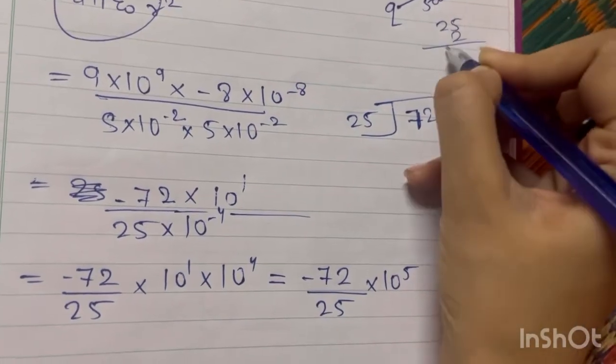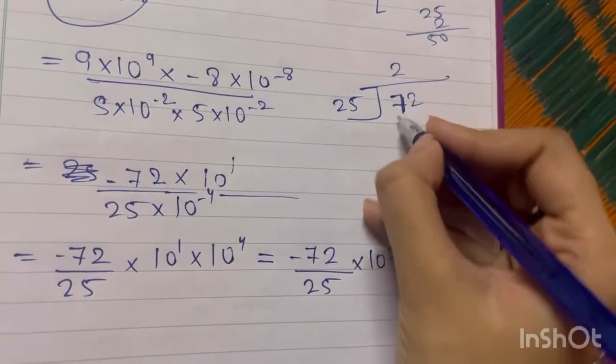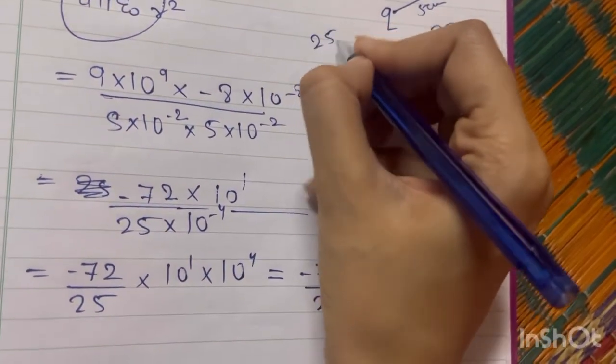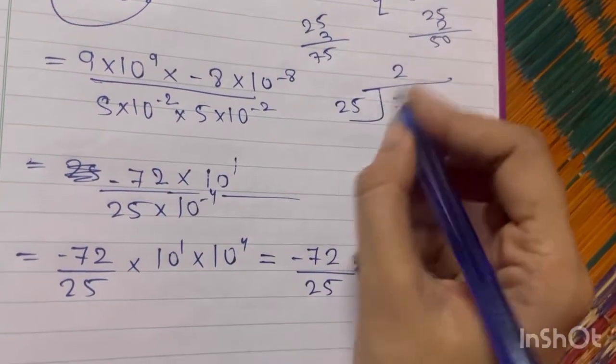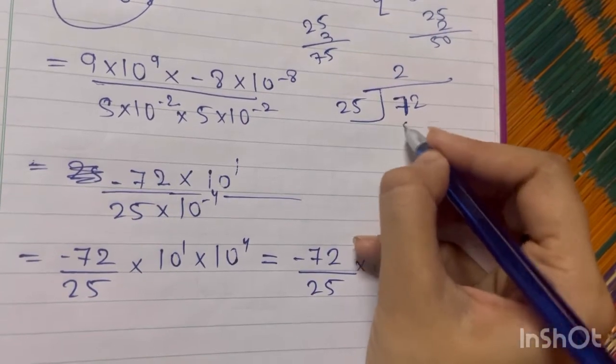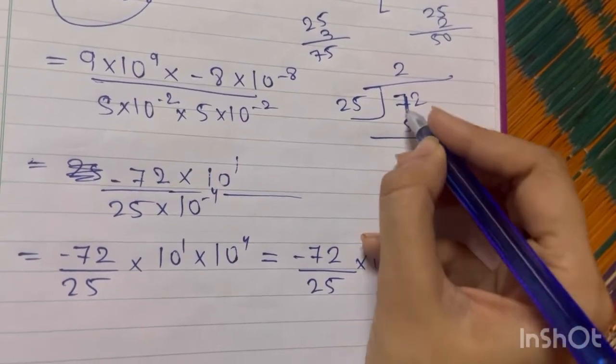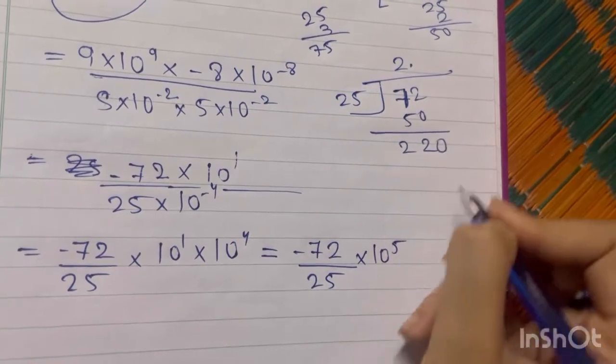25 times 2 is 50, and 25 times 3 is 75. So of course I will go with 25 times 2, that is 50. 2 minus 0 is 2, 7 minus 5 is 2. Point becomes 2 point 20.